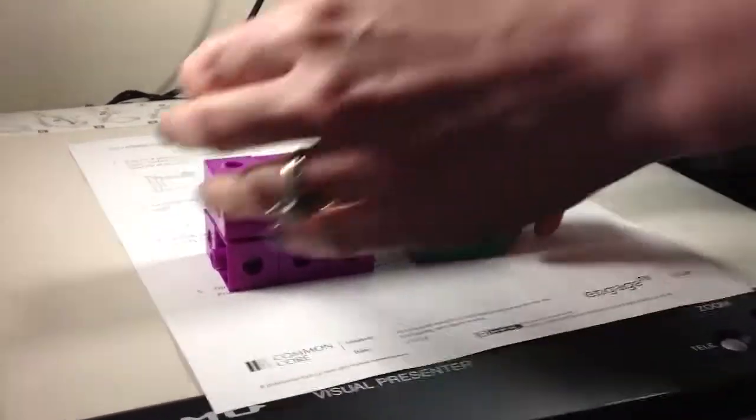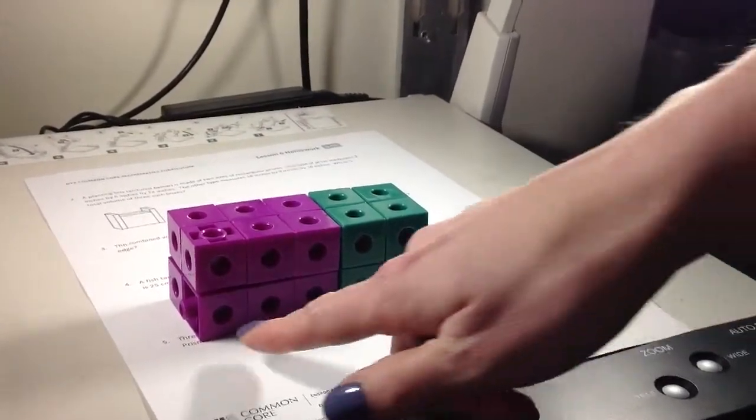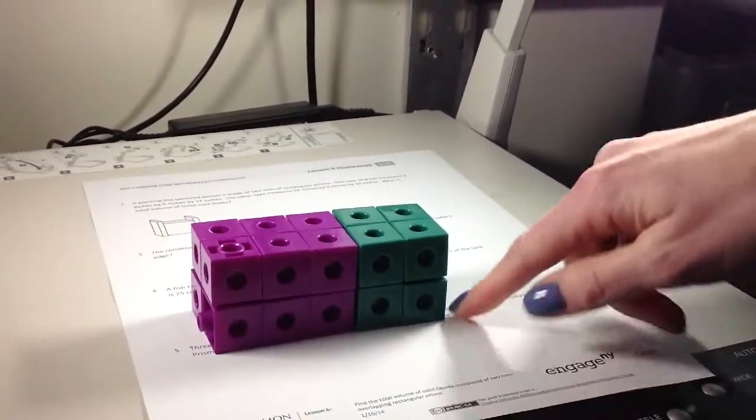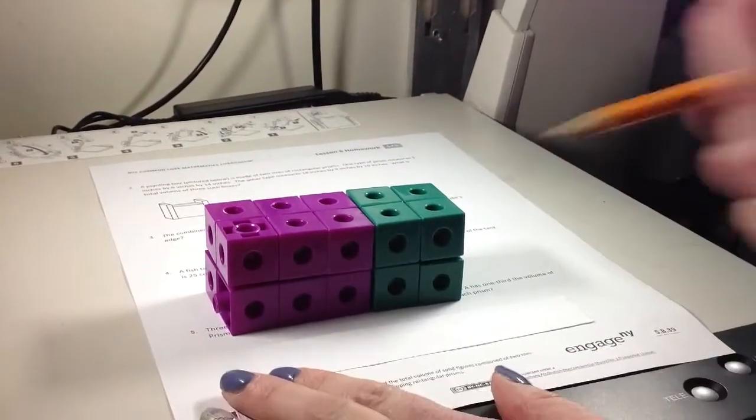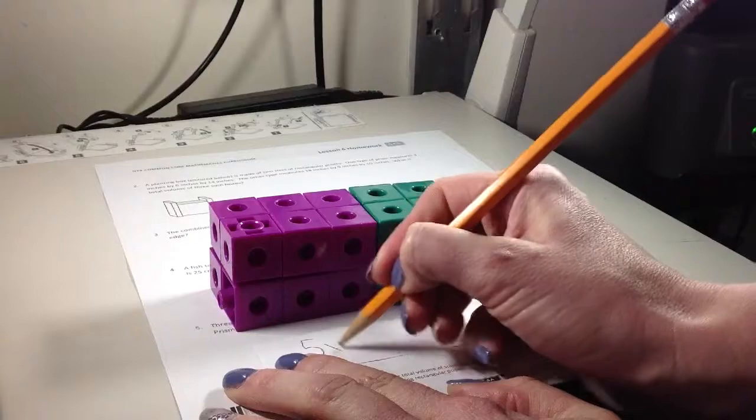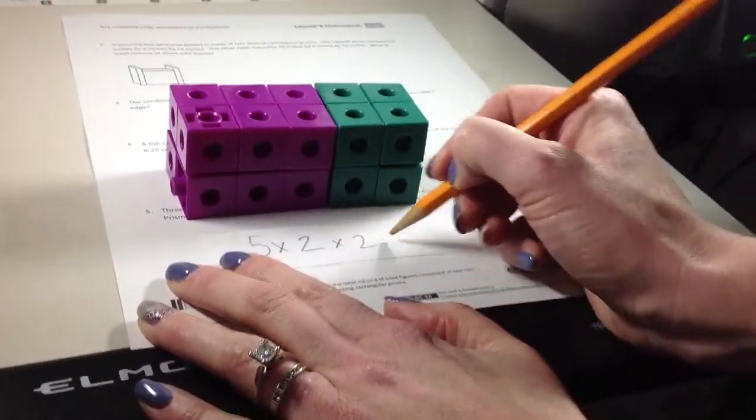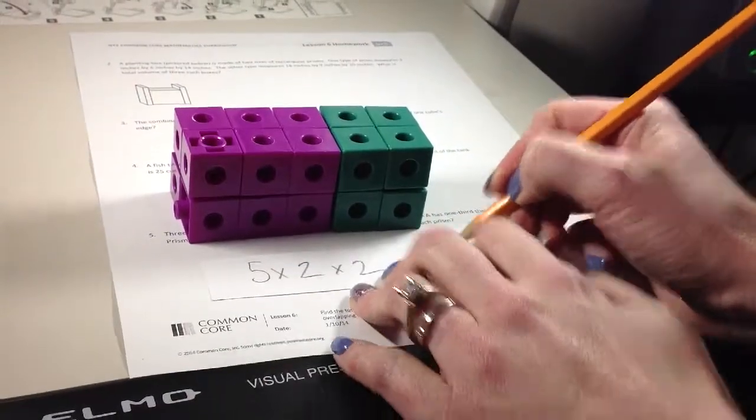So we talked about different ways to put them together. If I put it together like that, I can see that it's five long, two wide, and two high. So if I take the formula, it's five times two times two, which is going to give me 20.